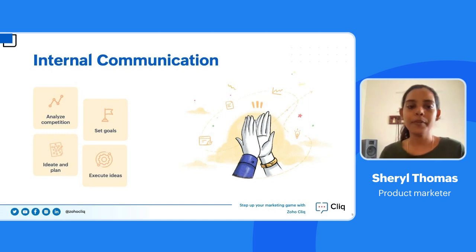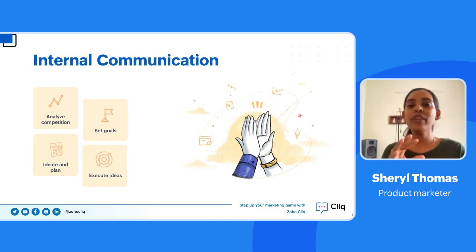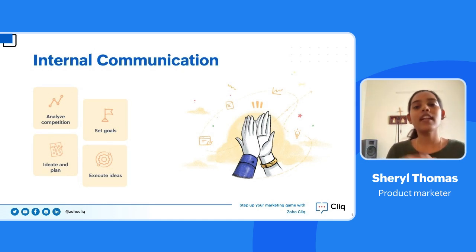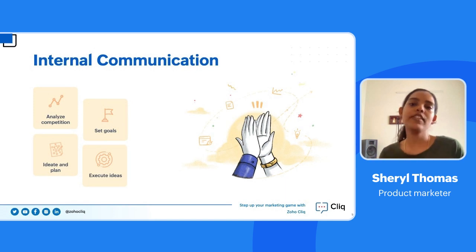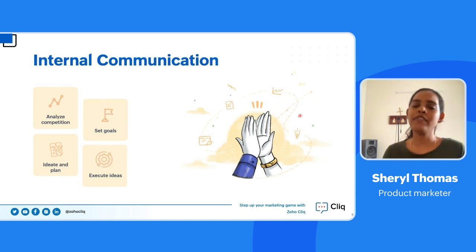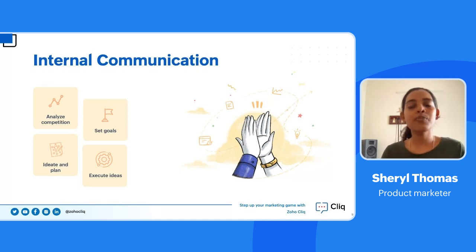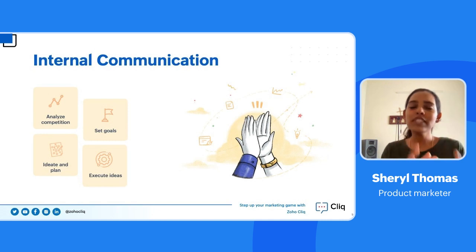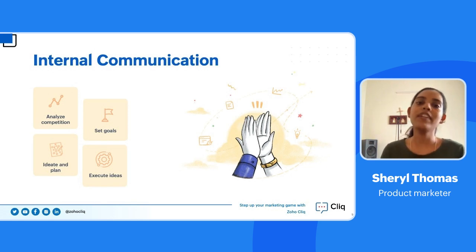Internal communication involves communicating within your organization, within your team especially, and also across departments. First, you need to discuss within your team to analyze the competition your brand faces — looking at what competitors do better or what you have that they don't. Once you've nailed analyzing competition, you need to set goals as a team to work on different aspects of marketing to achieve the desired results.